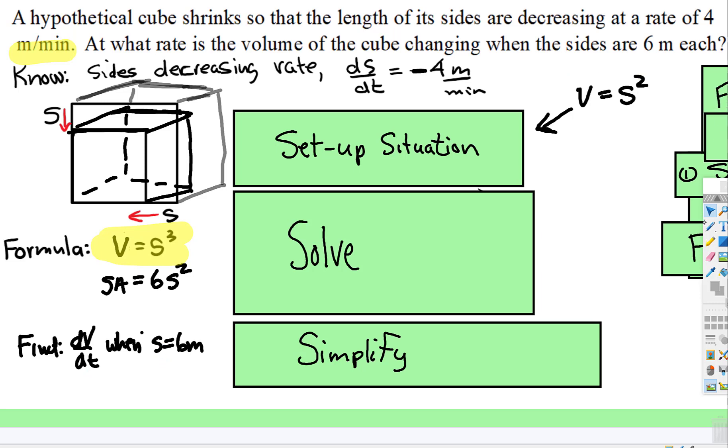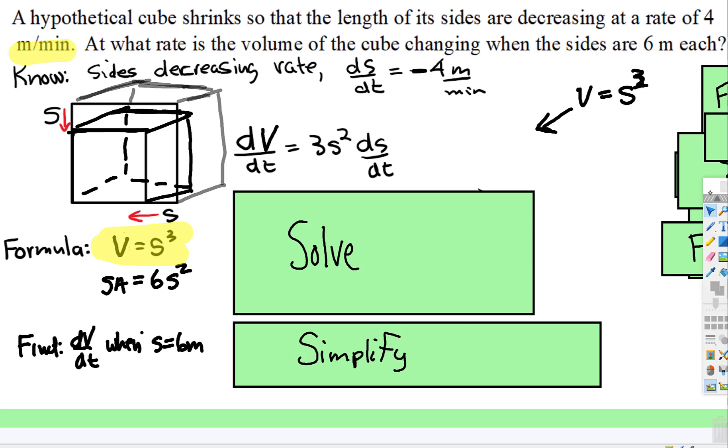So here is our original volume is sides cubed. When you take the derivative of that, you get three sides squared ds/dt. Because it is related rates, we use implicit differentiation. So the derivative of V is one, but then you tack on the dV/dt. We just made that one invisible.